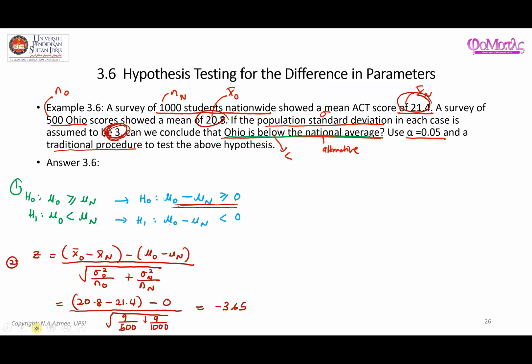The third step is to construct the critical region and find the critical value. We sketch the standard normal distribution curve with zero at the center. Based on the alternative statement, this is a one-sided hypothesis, and the direction is to the left — less than zero — so the critical region is on the left side of the distribution. The area is 0.05, matching the significance level given in the question.